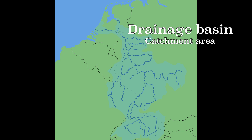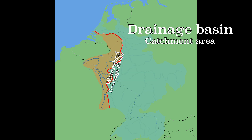The boundary between two river basins is called a watershed or a drainage divide. This is where the drainage basin of another river begins — in this case the Meuse, which runs from France to the Netherlands. The river ensures that the water is drained.